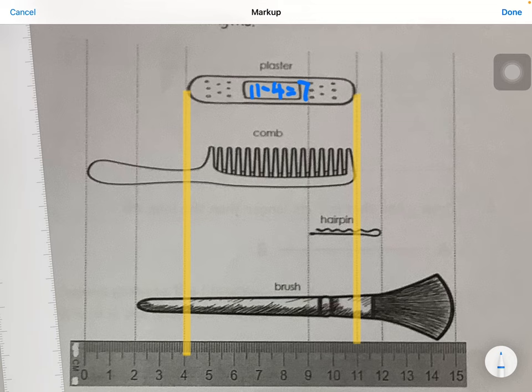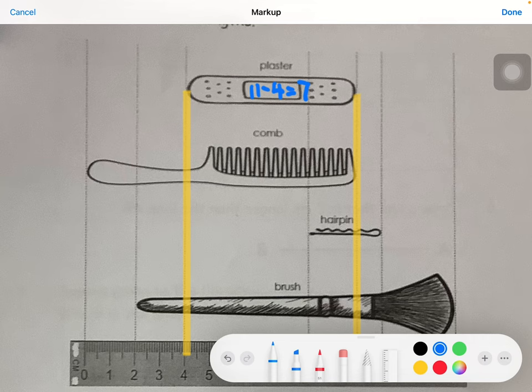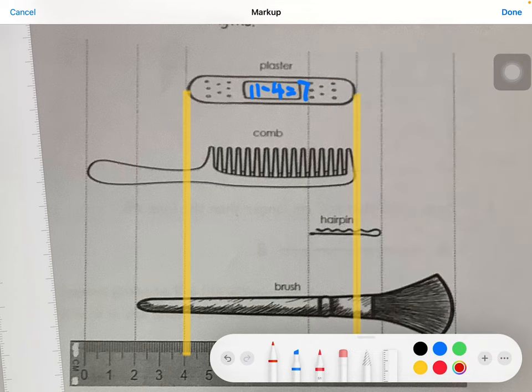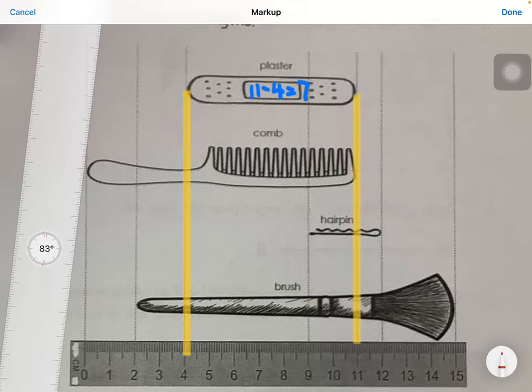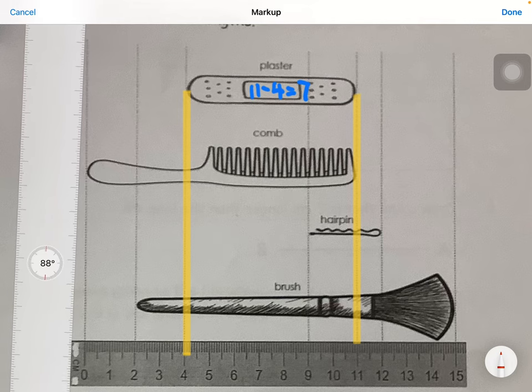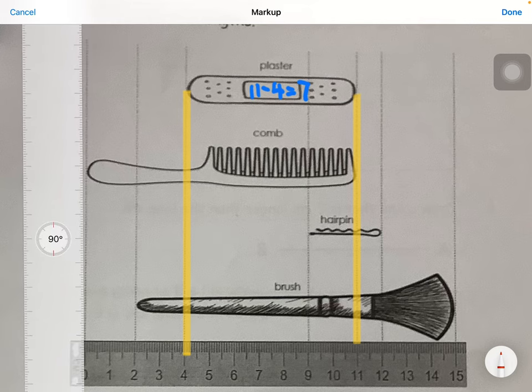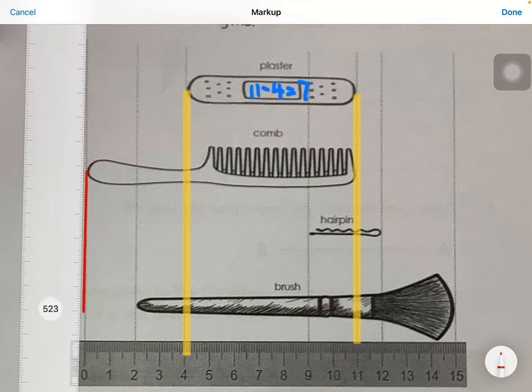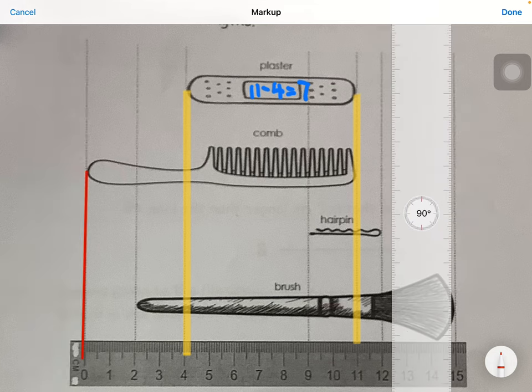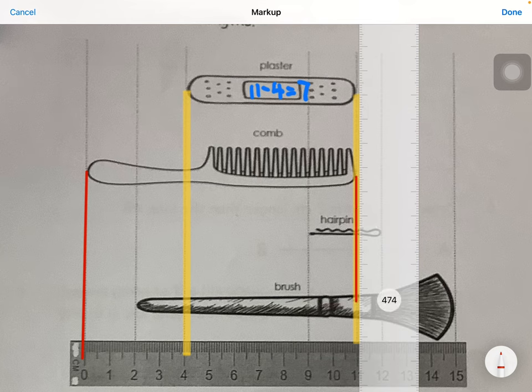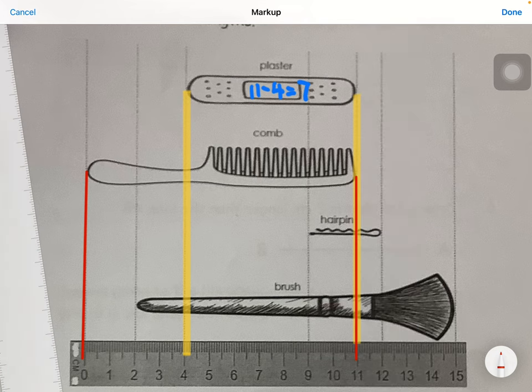And now the next one is the comb. I will use another color. So again, the start is here and the ending of the comb is also this line, the same as the plaster, so it's in red. So it starts at zero and it ends at 11, so the equation will be 11 minus 0 equals 11.